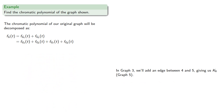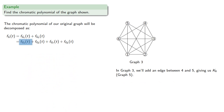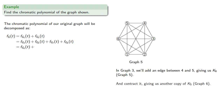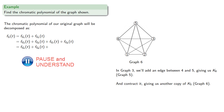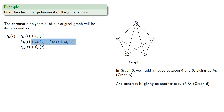In graph 3, we'll add an edge between vertices 4 and 5, giving us K6. And we'll contract to get another copy of K5. The remaining chromatic polynomials are still to be determined.